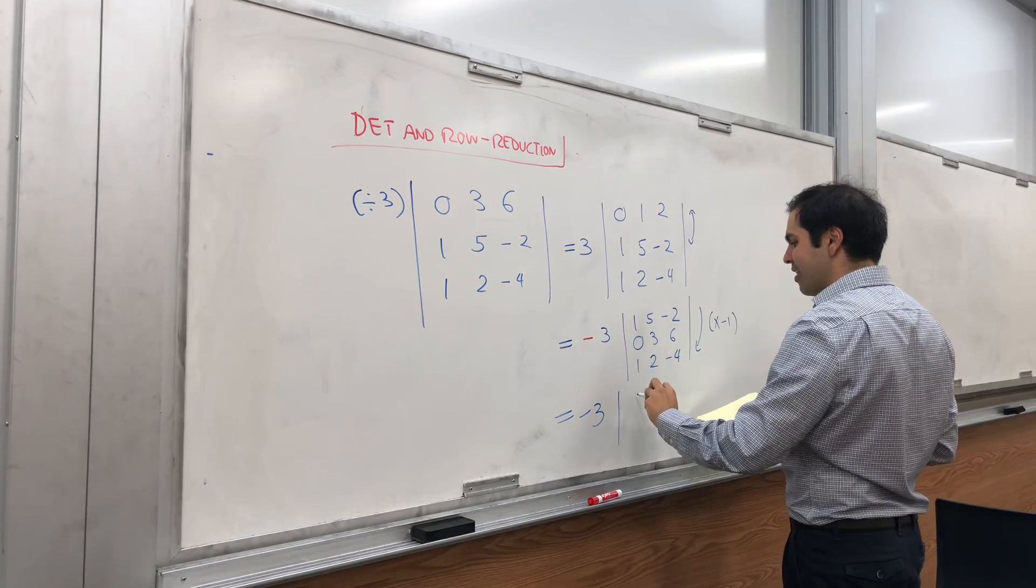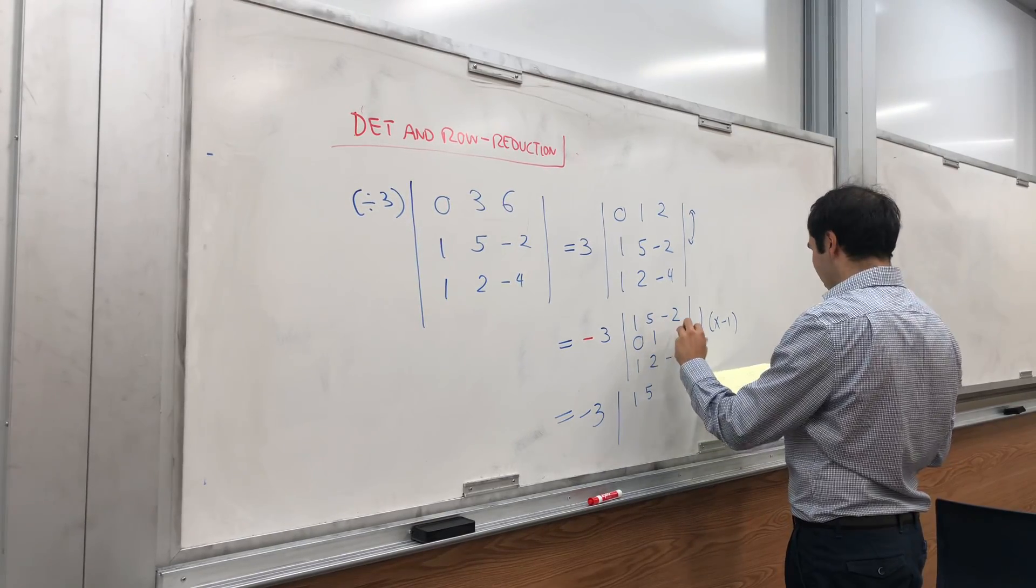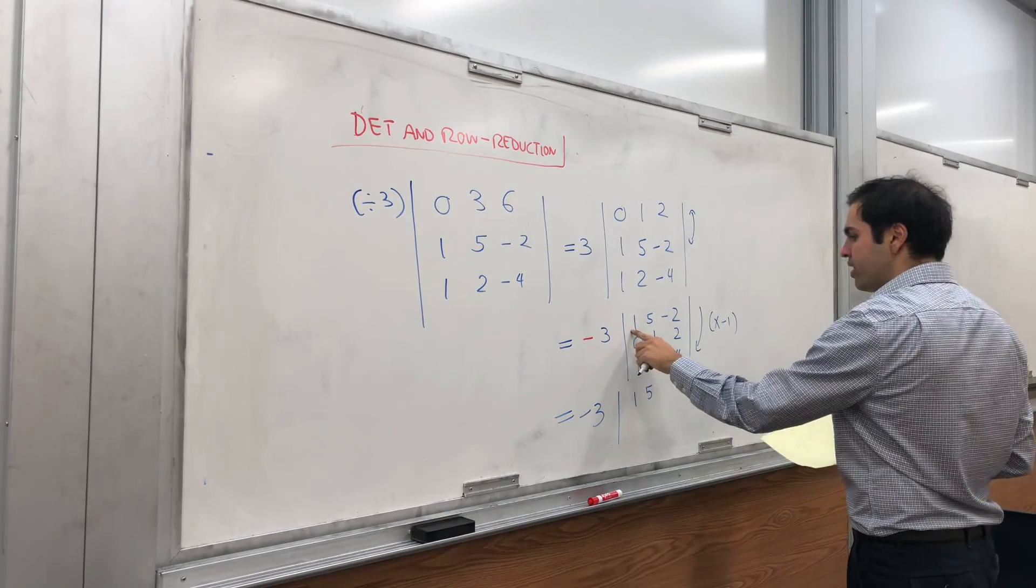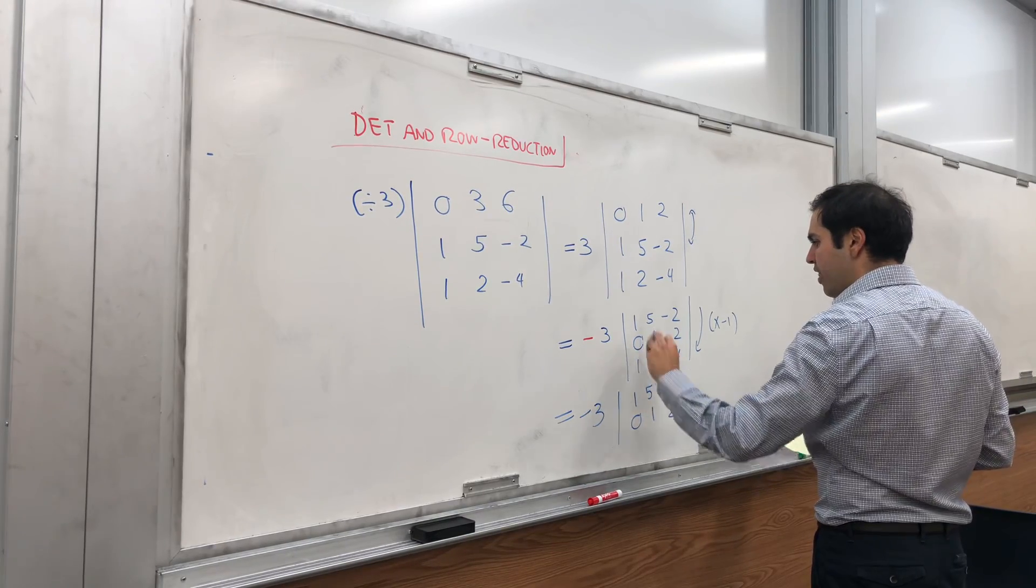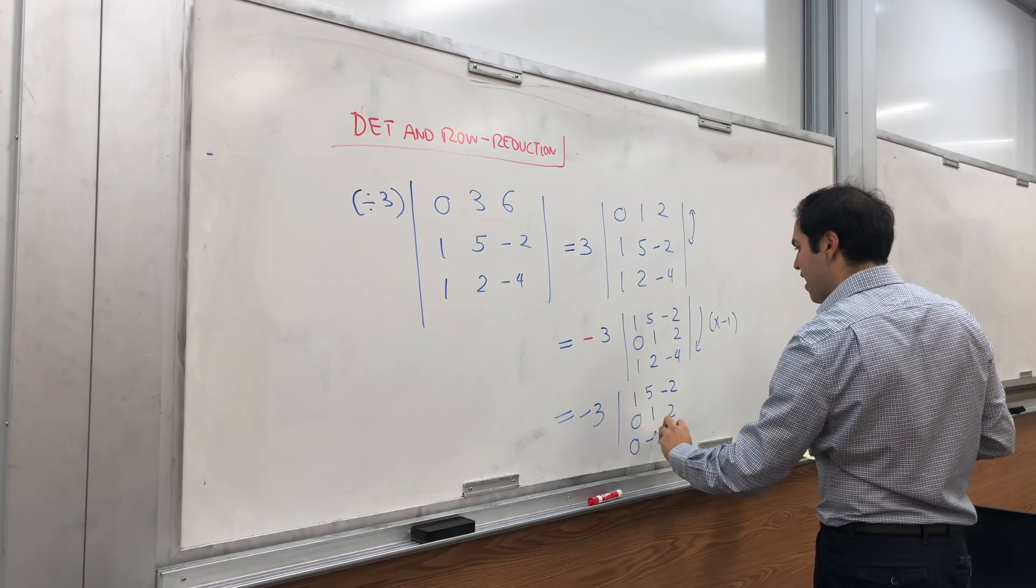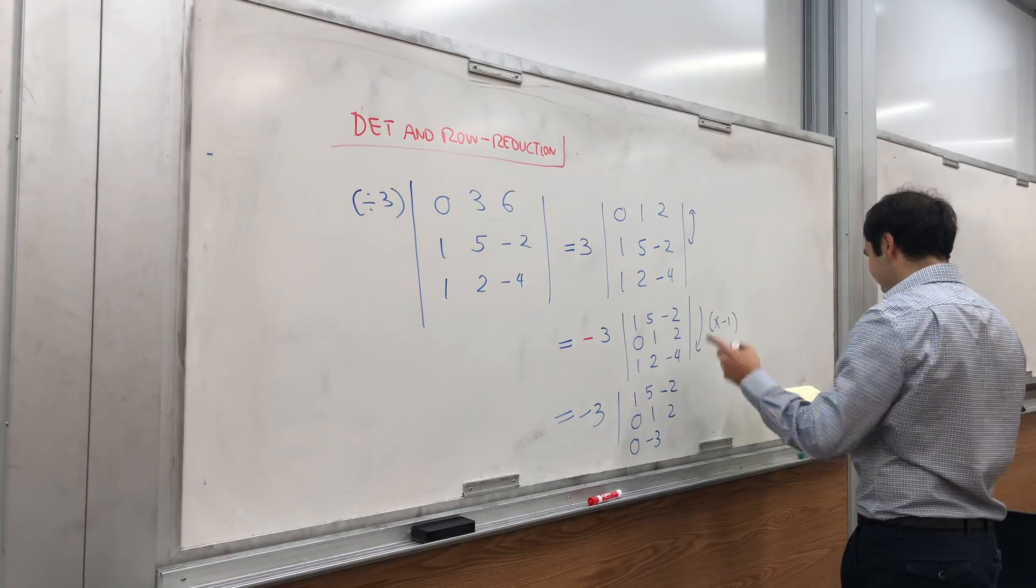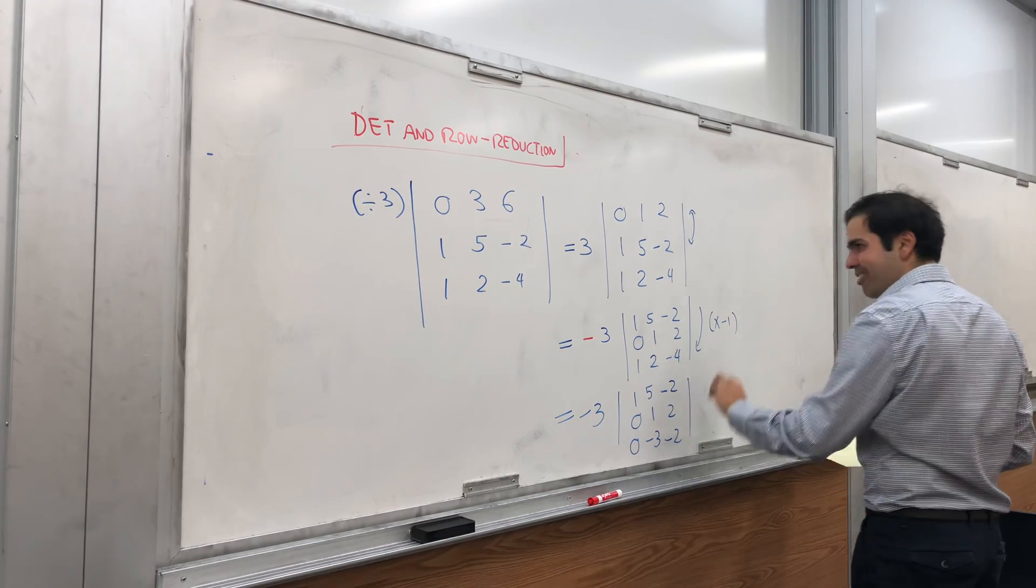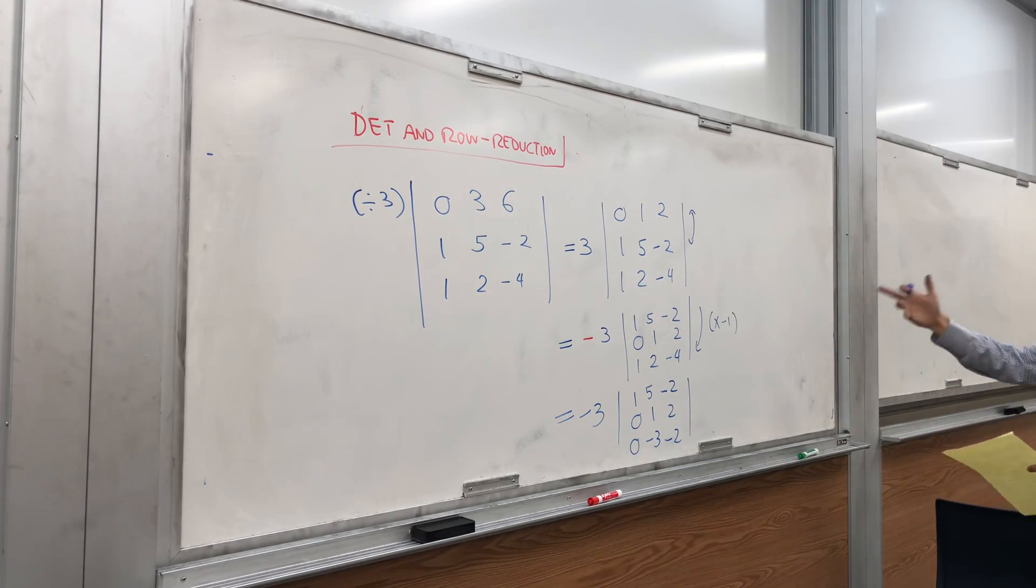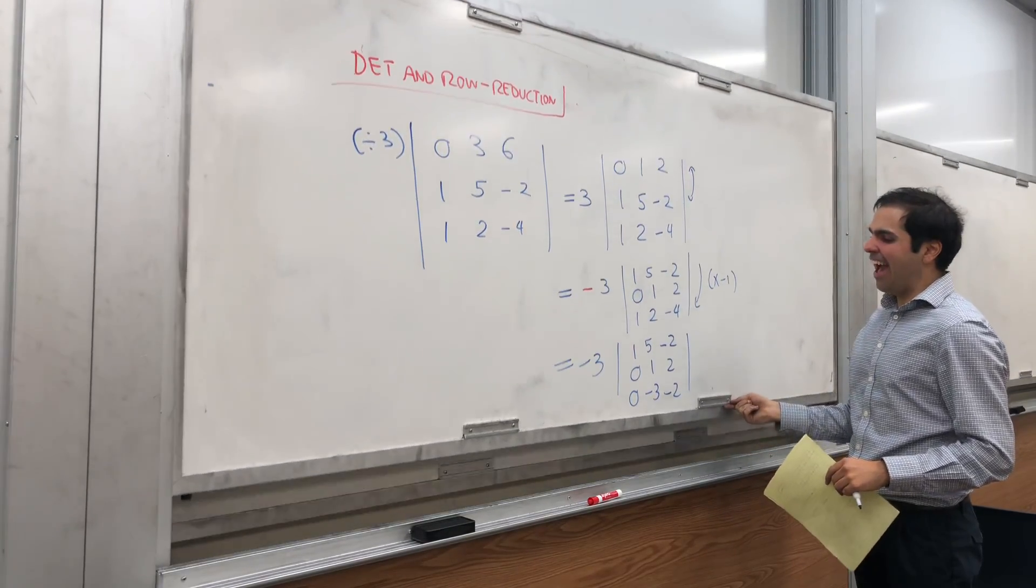So you get 1 5 -2, 0 1 2, and then 0 -3, and then... 2 minus 4 is -2, yes, okay. And then